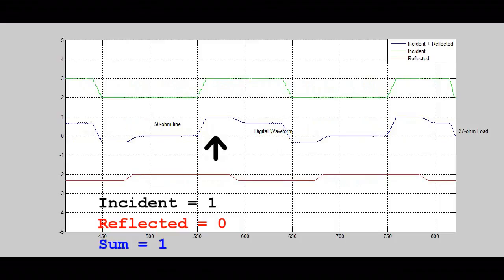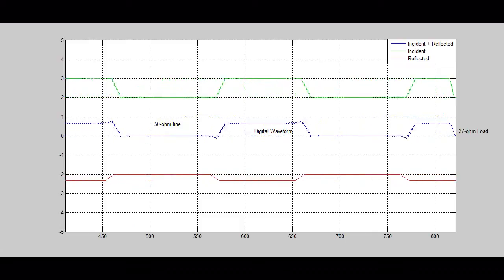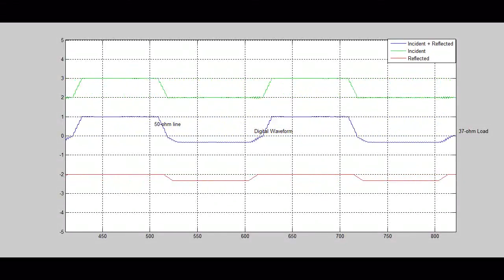Where the green incident wave is one volt and the red reflected wave is zero volts, the blue voltage sum is one volt. And where both the incident and reflected voltage waves are zero, the sum of the voltages is, of course, zero. We can see that the ripple-y waveform that's on the blue line is a simple voltage sum of all the incident and reflected waves.